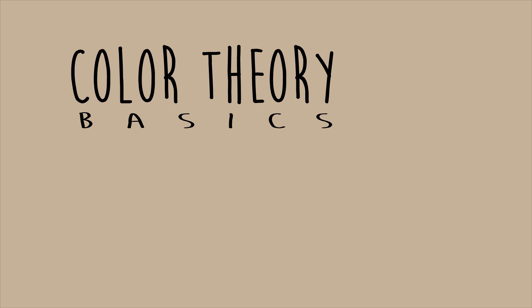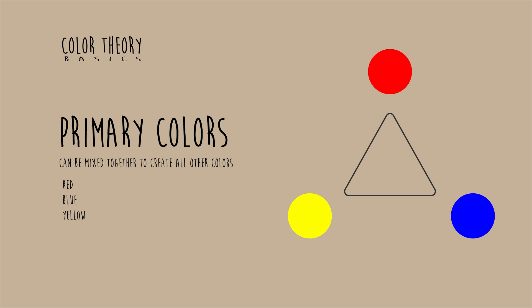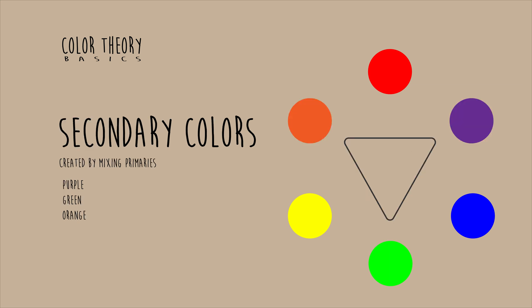We're going to talk about color theory basics today. Color theory has a lot of different things in it, so we start with the primary colors, which are red, blue, and yellow.